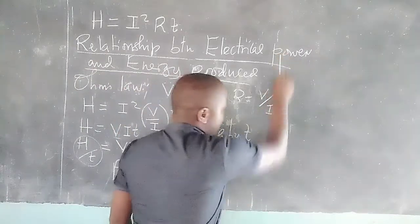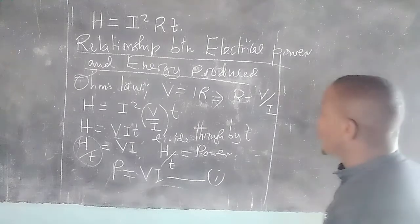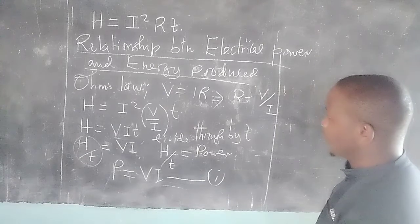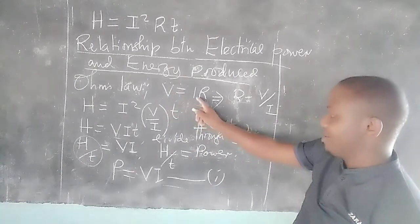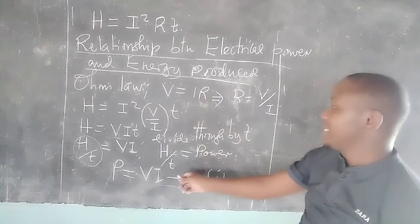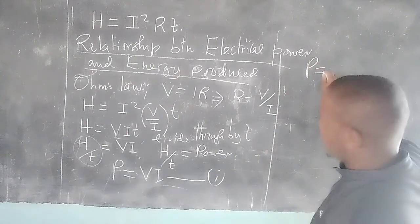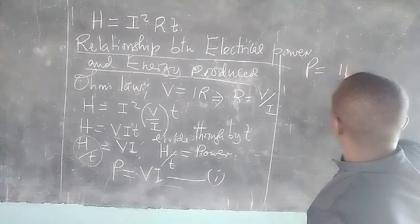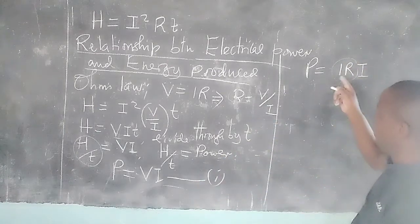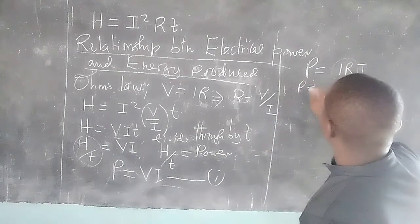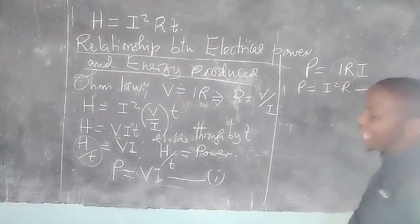Then we proceed to find another equation. According to Ohm's law, V = IR. So at this stage, instead of V we can use IR, and we can say that power equals IR times I. In Equation 1, we can replace V with IR, which means power can also be given by P = I²R. This is Equation 2.